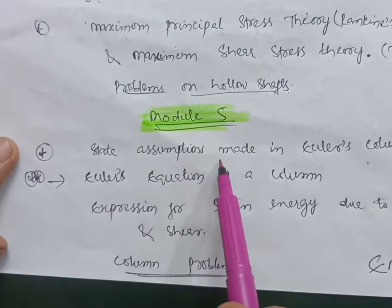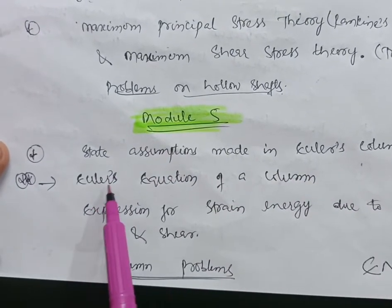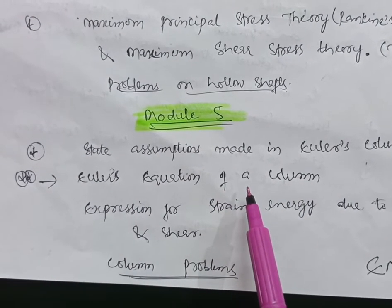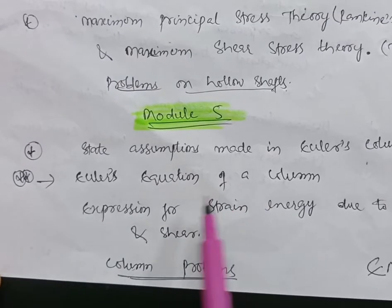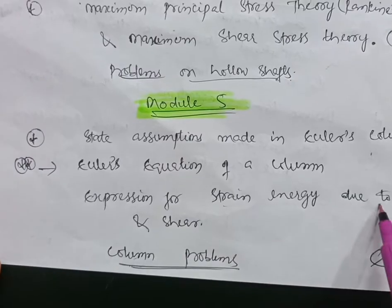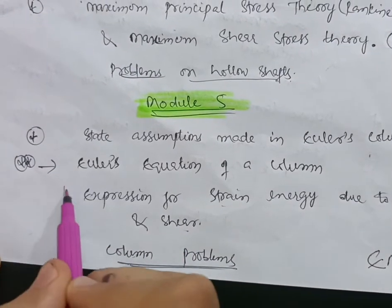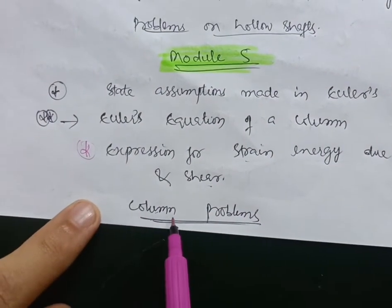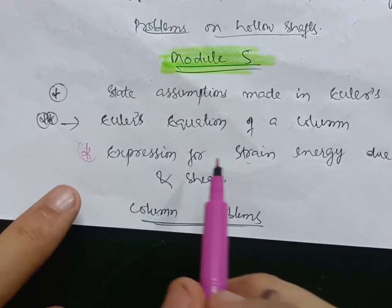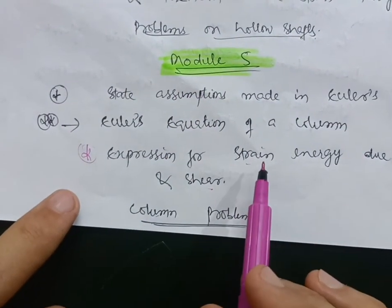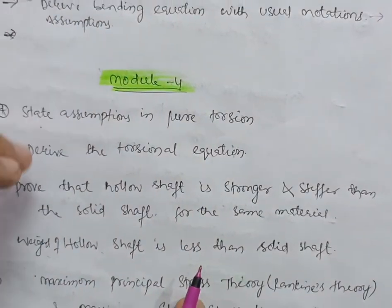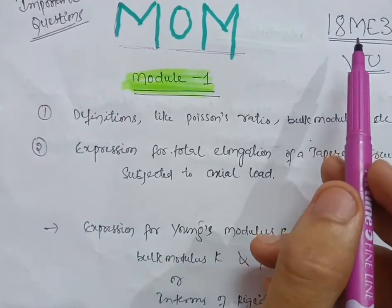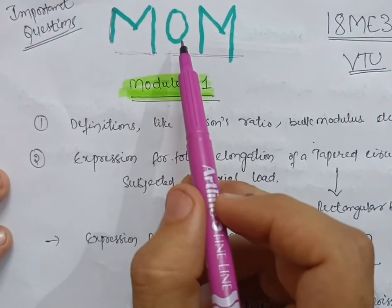In the last module, state the assumptions made in Euler's column theory and go through Euler's equations for columns — based on fixed ends and hinged ends. Also cover the expression for strain energy due to bending and shear, which is an important question. Column problems are much easier, so you can easily get 20 marks in this module. That's all the content needed to pass the MOM subject, 18ME32 — all the best for your upcoming exam!